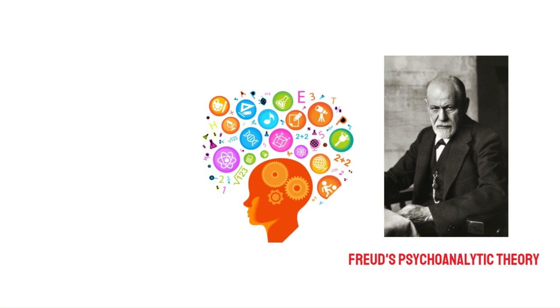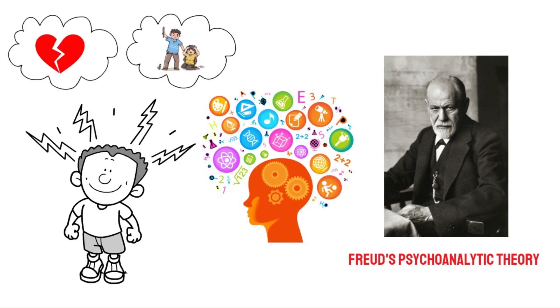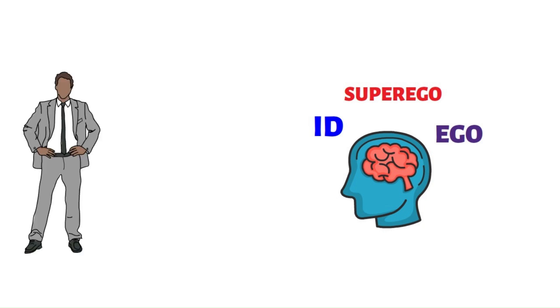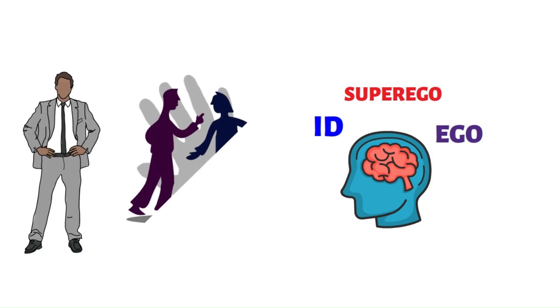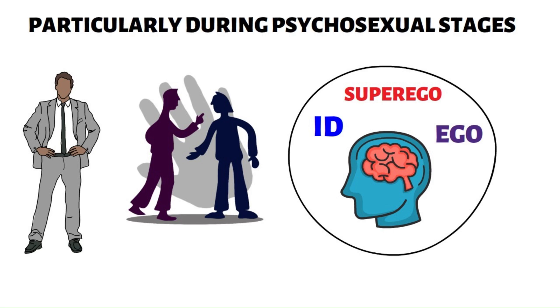Psychoanalytic Theory: Freud's psychoanalytic theory suggests that personality is shaped by unconscious drives and childhood experiences. It posits that the mind consists of three parts — the id, ego, and superego — and personality development is influenced by the resolution of conflicts between these components, particularly during psychosexual stages.